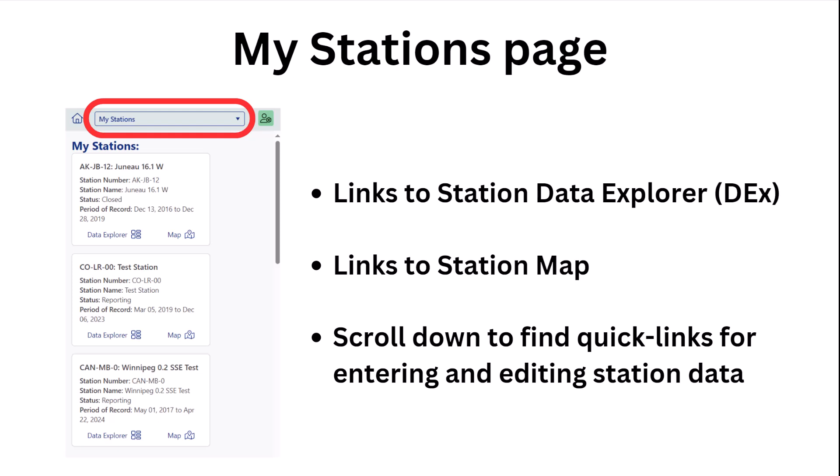Now let's review the options and details of the items found in the navigation menu. The My Stations page will display all stations associated with your account, open or closed, and will provide details about the period of record and links to view your data in the data explorer tool or view it on the Kokoraz interactive map. Scrolling down, you will find details about the various data entry options and links to view or enter data, which are also found in the navigation menu.